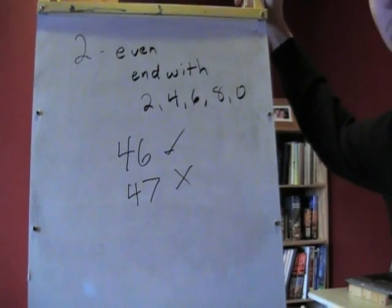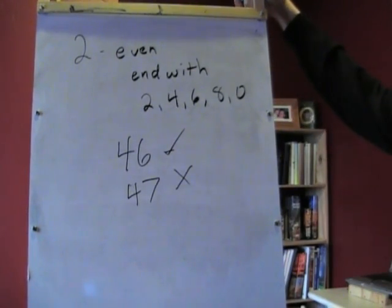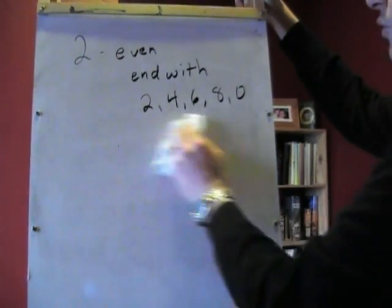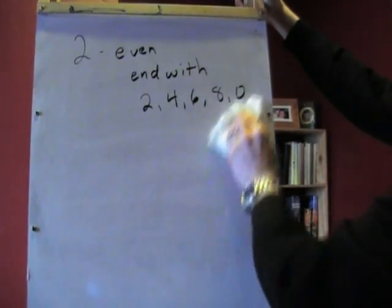So if it's divisible by 2, it means if it's even, so it would end with one of those five numbers: 2, 4, 6, 8, or 0.